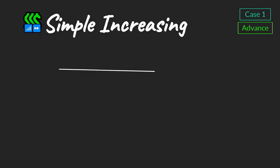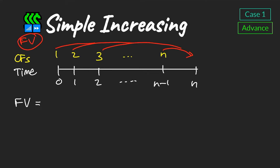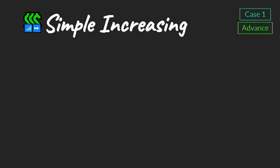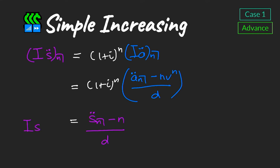To find the future value of cash flows paid in advance, we follow the same approach: simply accumulate the increasing annuity present value formula. This gives a new formula for the future value of an increasing annuity paid in advance for a period of n. Multiplying through by (1 + i)ⁿ gives the final formula, which is very similar to the future value formula for cash flows paid in arrears, except for the denominator.